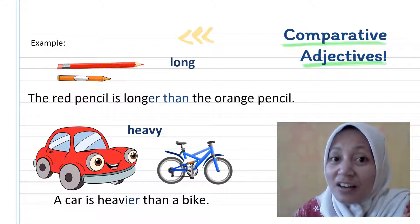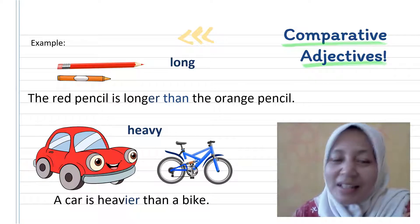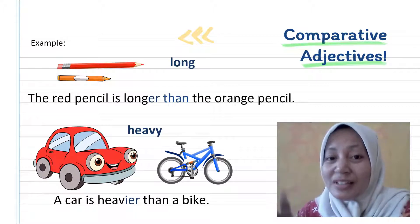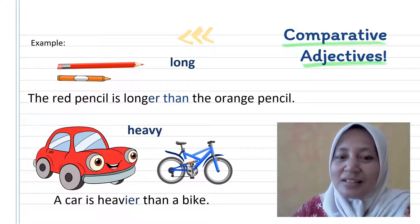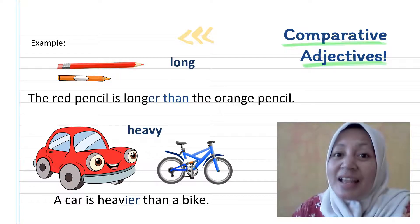I have a car and a bike. We will use the word 'heavy.' Say the word and clap your hand — heavy, two syllables. We also add -er for adjectives that have two syllables. The sentence will be: 'A car is heavier than a bike.'